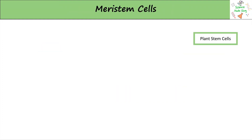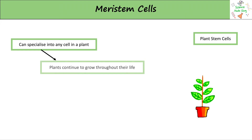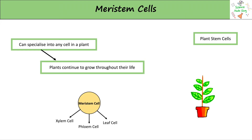Instead of stem cells, plant cells have meristem cells. These can specialise into any cell in a plant, as plants continue to grow throughout their life. So, like an embryonic stem cell, they can differentiate into any plant cell.